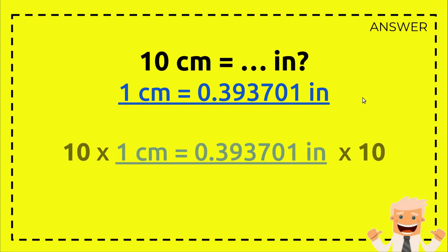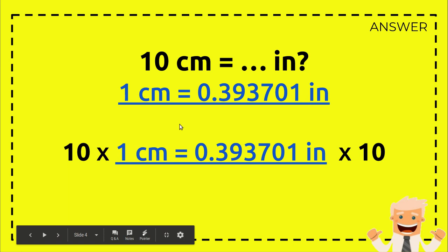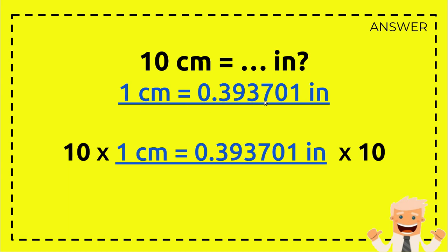And then as you can see, to answer this question first you need to write down the whole formula from here: one centimeter equals this, so you put down this exactly the same here. And then you multiply both numbers with 10, which you have from here.